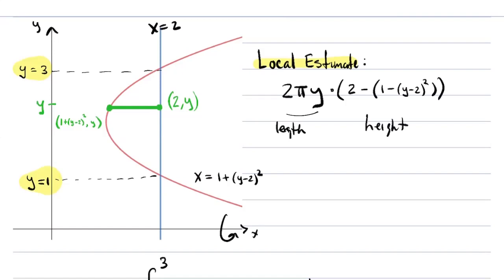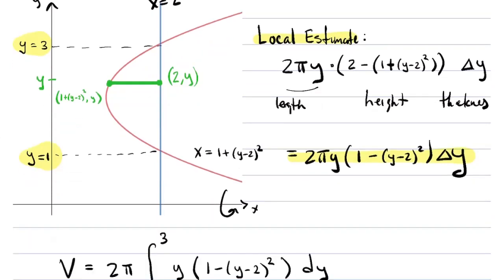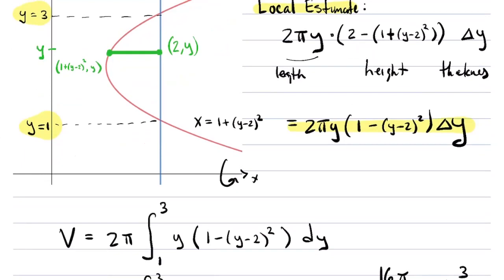The height of the cylindrical shell is 1 minus (y minus 2) squared, and the thickness is the change in the integration variable, dy. Length times height times thickness is volume — that's our local estimate. Cleaning it up: 2 take away 1 is 1, and distributing the minus sign gives minus (y minus 2) squared. Adding those local estimates over all subintervals gives a Riemann sum; taking the limit as delta y goes to zero gives us an integral.